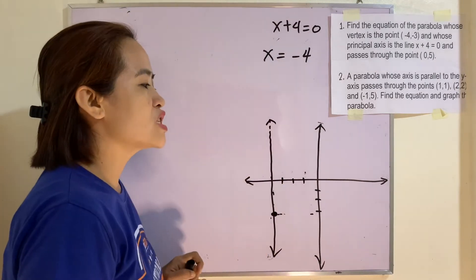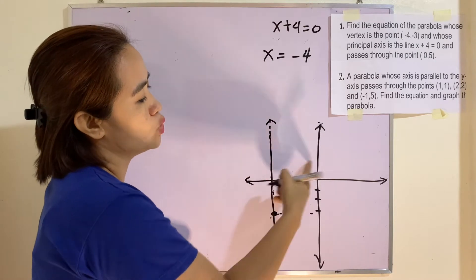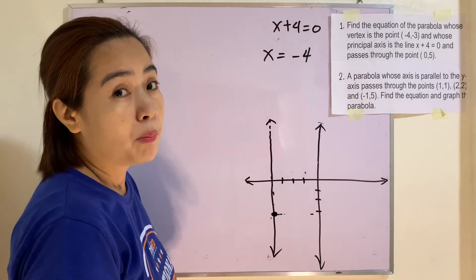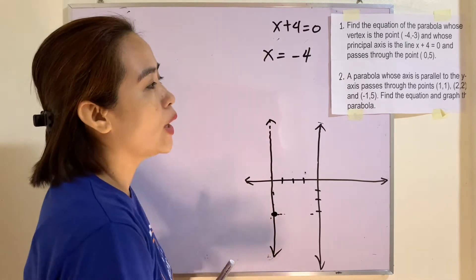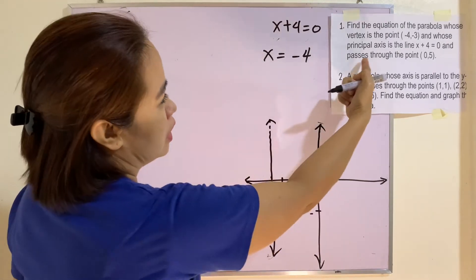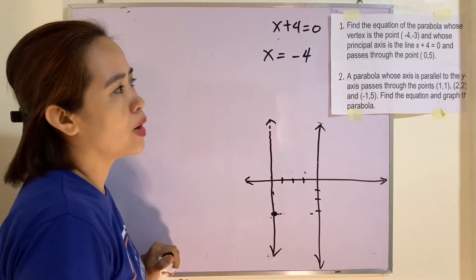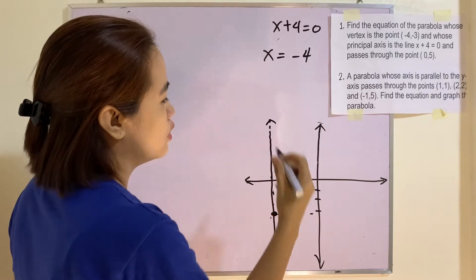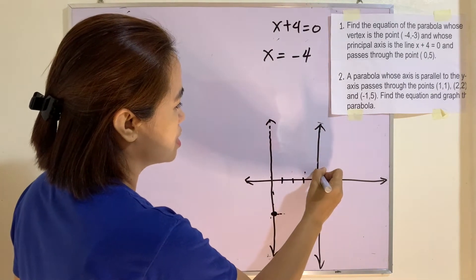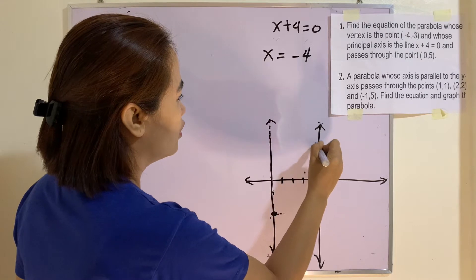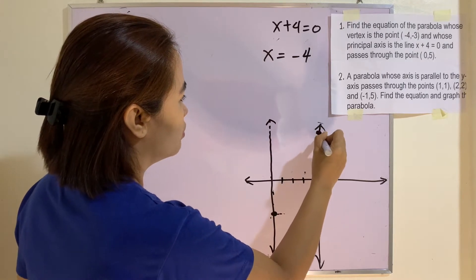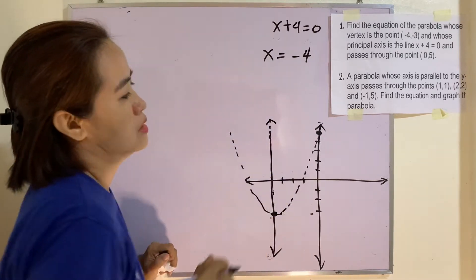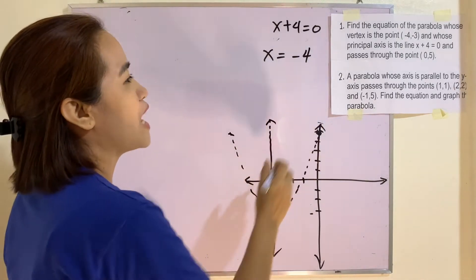If our principal axis is parallel to the y-axis, our parabola may either open upward or downward. But it is also mentioned that this parabola passes through the point (0, 5). If we sketch it, we can see that our parabola opens upward.